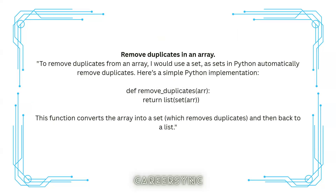The second question was remove duplicates in an array — a technical question. To remove duplicates from an array, you can use a set. A set in Python automatically removes duplicates. Here is the simple Python implementation: define remove_duplicates(array), return list(set(array)). This converts the array into a set and then back to a list. You should also explain your approach properly. If this question is asked in Java or C++, the implementation will be different.